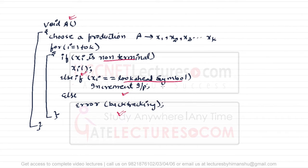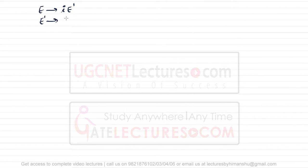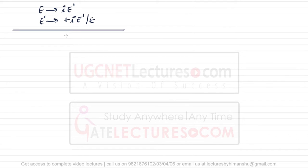This is the generalized pseudocode format for all algorithms. For a given particular grammar we can write the recursive descent parser. Assuming we have the following grammar: E derives i E', and E' derives +iE' or epsilon. We obtained this grammar by converting a left-recursive grammar to a right-recursive grammar, as seen in previous videos.